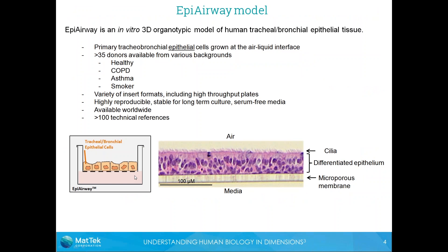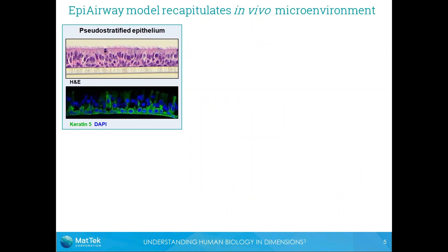Our EpiAirway model is an organotypic model of the human tracheal-bronchial epithelial tissue, composed of primary human epithelial cells grown at the air-liquid interface. We have over 35 donors available from various backgrounds, including both healthy donors, disease donors, and smokers. We can produce these tissues on a variety of insert formats including high-throughput plates, and our tissues are highly reproducible and stable for long-term culture. We can ship them worldwide, and on our website there are over 100 technical references for the EpiAirway model.